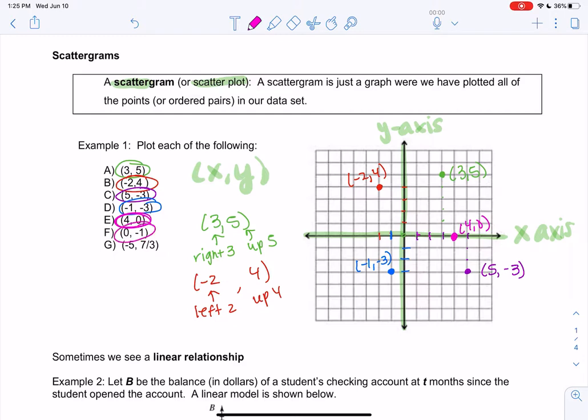0, negative 1. Since the first number is 0, we don't go left or right. We'll just go down 1, and we'll get this point right here. 0, negative 1.